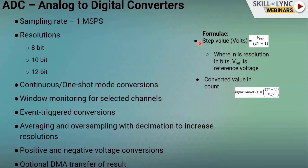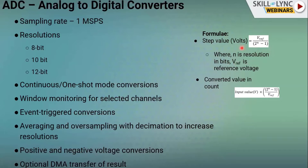The step value is the minimum value the ADC can monitor. The formula is V_reference divided by (2^n − 1), where n is the resolution. For example, with n=10 and V_reference = 2.5V: 2.5 / 1023 ≈ 2.5 millivolts. So the step value is 2.5 mV — the minimum change the ADC can respond to.